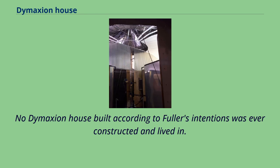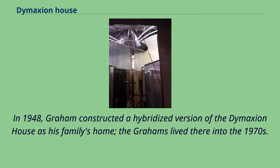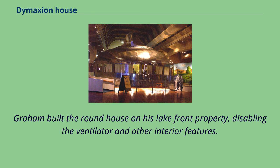No Dymaxion House built according to Fuller's intentions was ever constructed and lived in. The only two prototypes of the round aluminum house were bought by investor William Graham, together with assorted unused prototyping elements as salvage after the venture failed. In 1948, Graham constructed a hybridized version of the Dymaxion House as his family's home. Graham built the round house on his lakefront property, disabling the ventilator and other interior features.